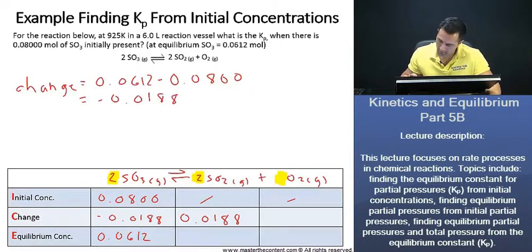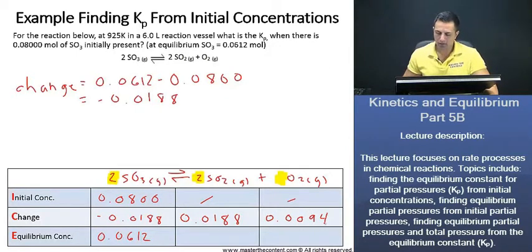We can go ahead and just write down 0.0188. But now, because we're going from two moles to a single mole for the oxygen, it's going to be half that amount, the change. Therefore, we would then write down 0.0094.